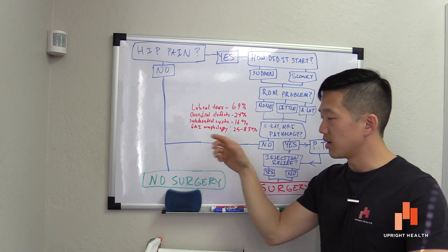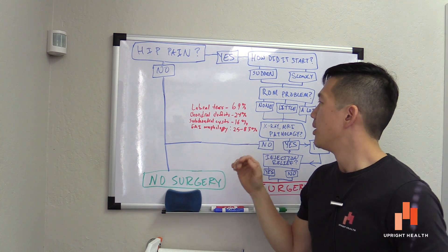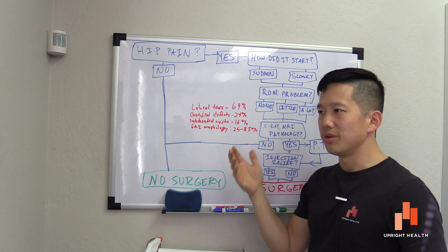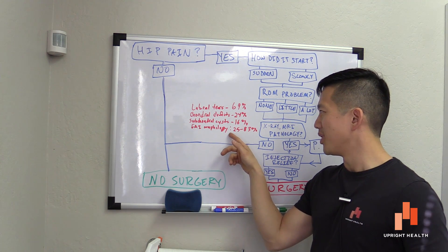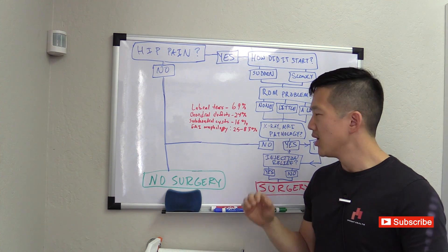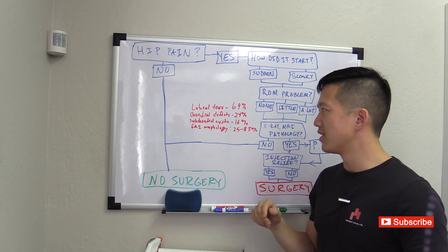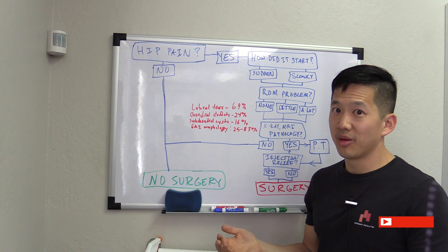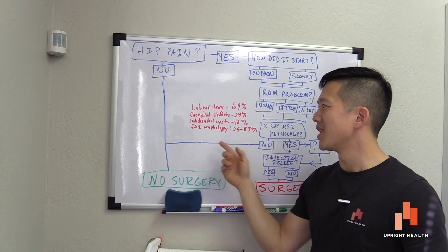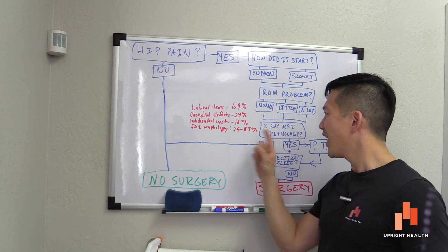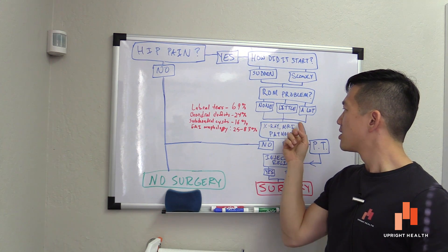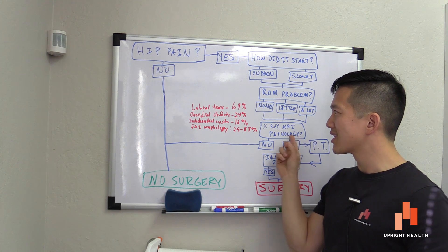So FAI morphology, this is actually FAI bone shapes, CAM, pincer impingement bone shapes. Depending on the study you read and depending on the size of the study and when it was published, you'll find there are incidence rates of 25% to 83%. A really recent 2015 study on an older population with well-functioning hips without problems showed an 83% prevalence rate for FAI bone morphology, and that's people who don't have the symptoms. So it's super, super unlikely that the bone morphology is the thing that's causing the problems. However, it's highly likely that you will find it in x-ray and MRI scans.